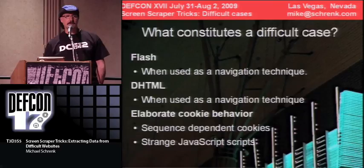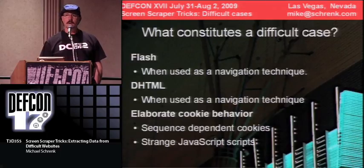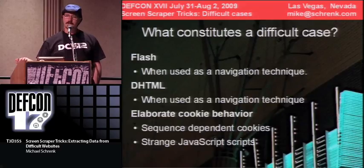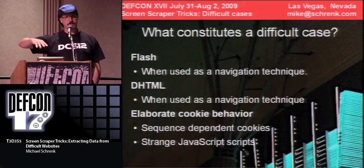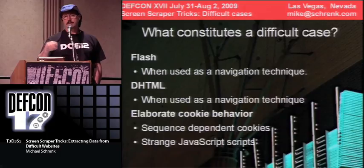Flash is a problem primarily when it's used in navigation, though there are techniques for extracting text from Flash. Same thing with dynamic HTML. The other thing that's gotten bad is some really bizarre cookie behavior — I've seen JavaScript that assembles itself after it flows and then writes cookies in certain sequences, and images that are writing cookies. It's really difficult to recreate when analyzing network traffic.